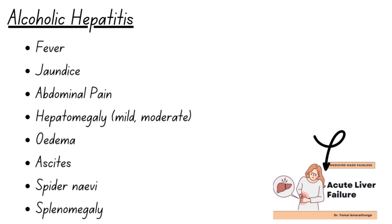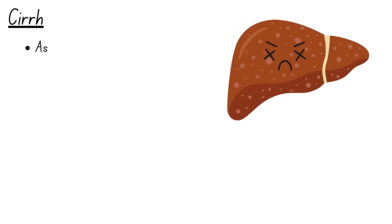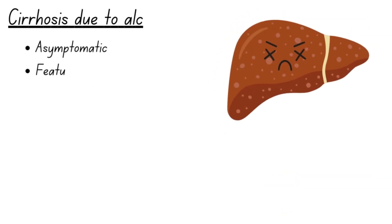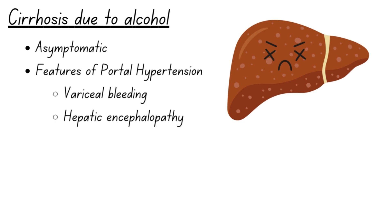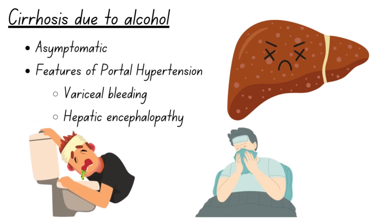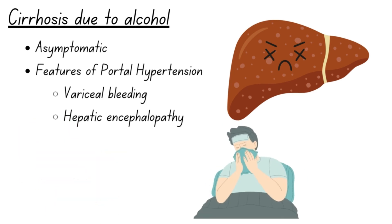In the early stages, cirrhosis can be asymptomatic. However, as the disease progresses, patients typically present with features of portal hypertension, including variceal bleeding and hepatic encephalopathy.